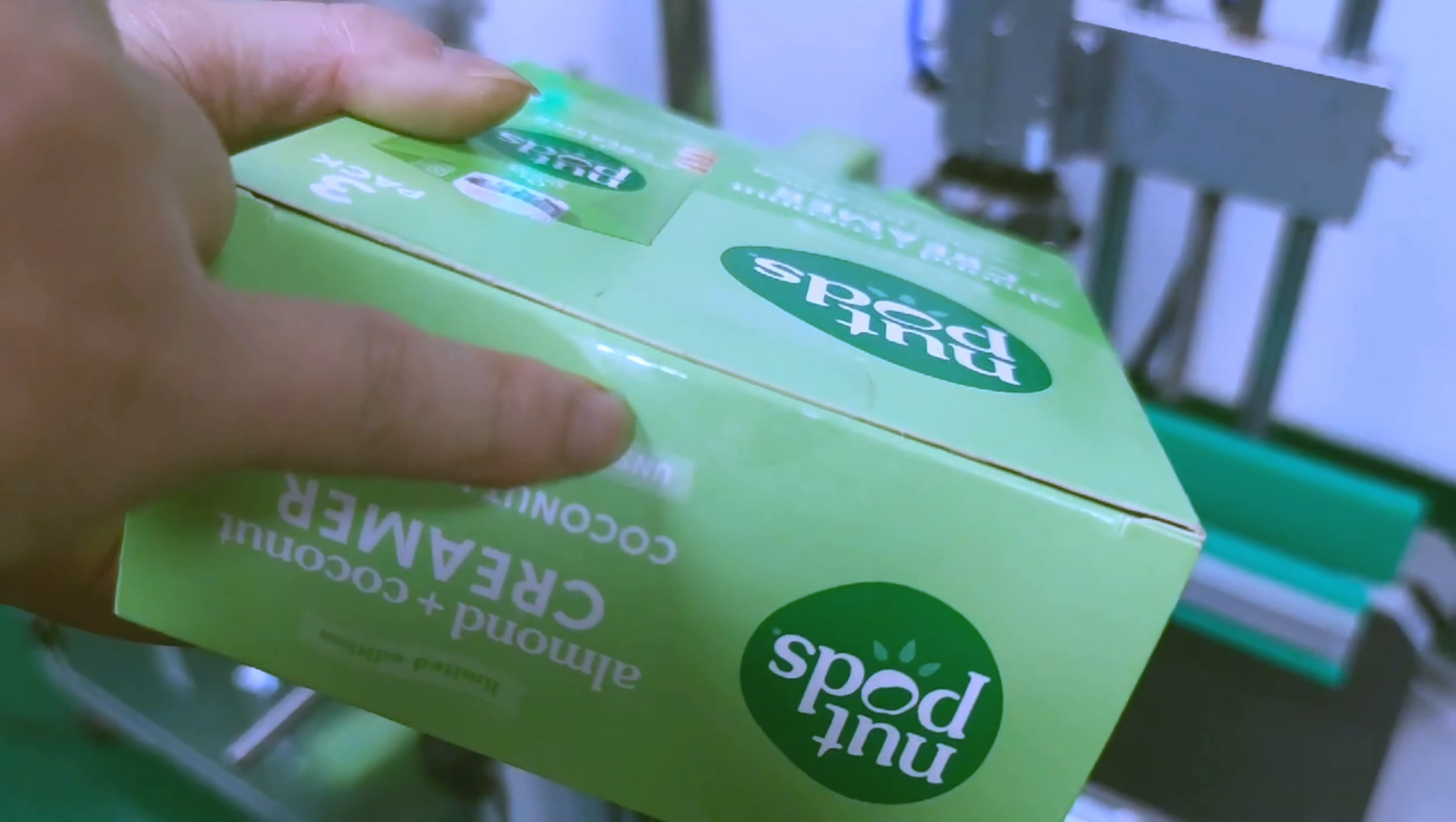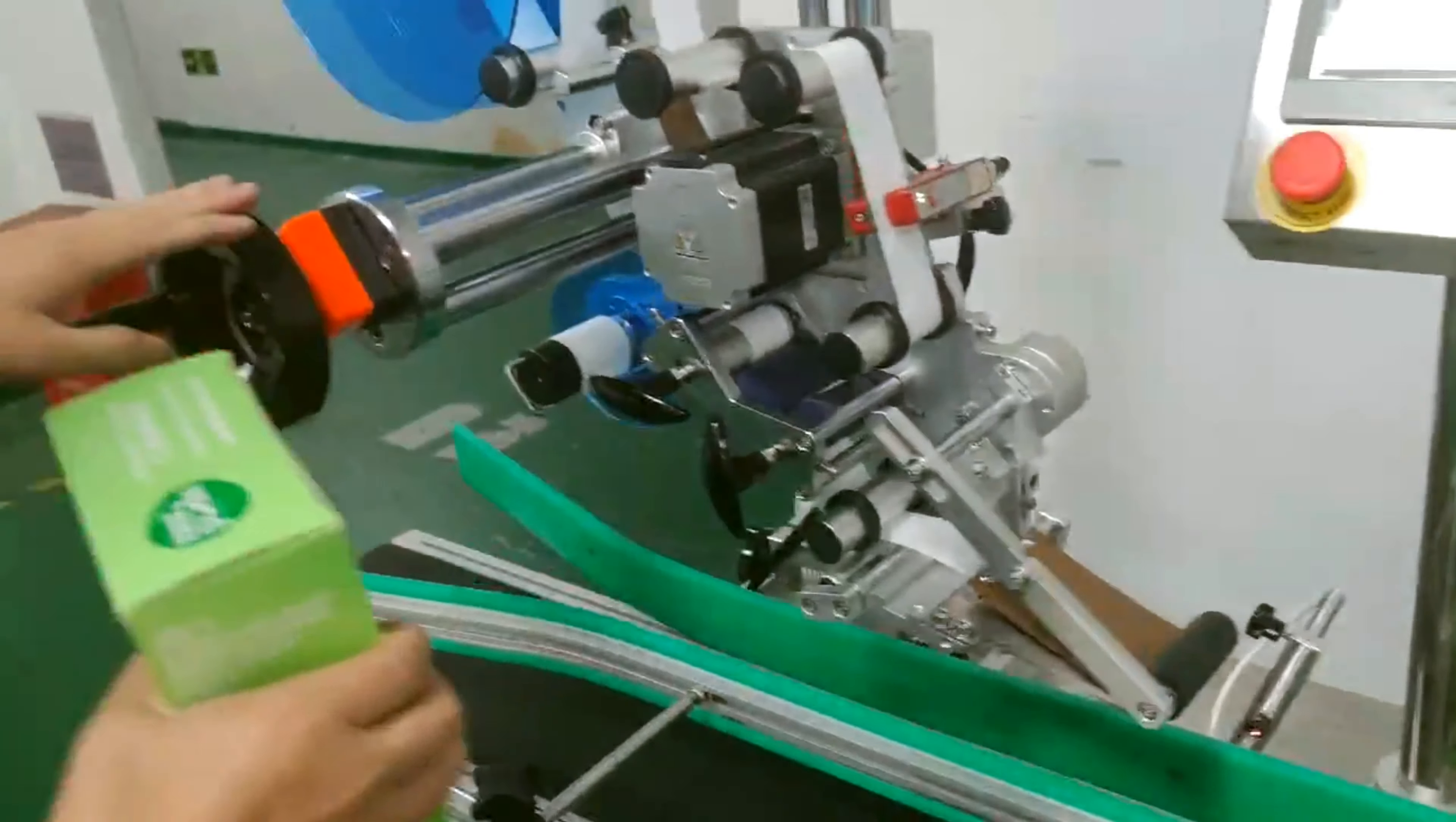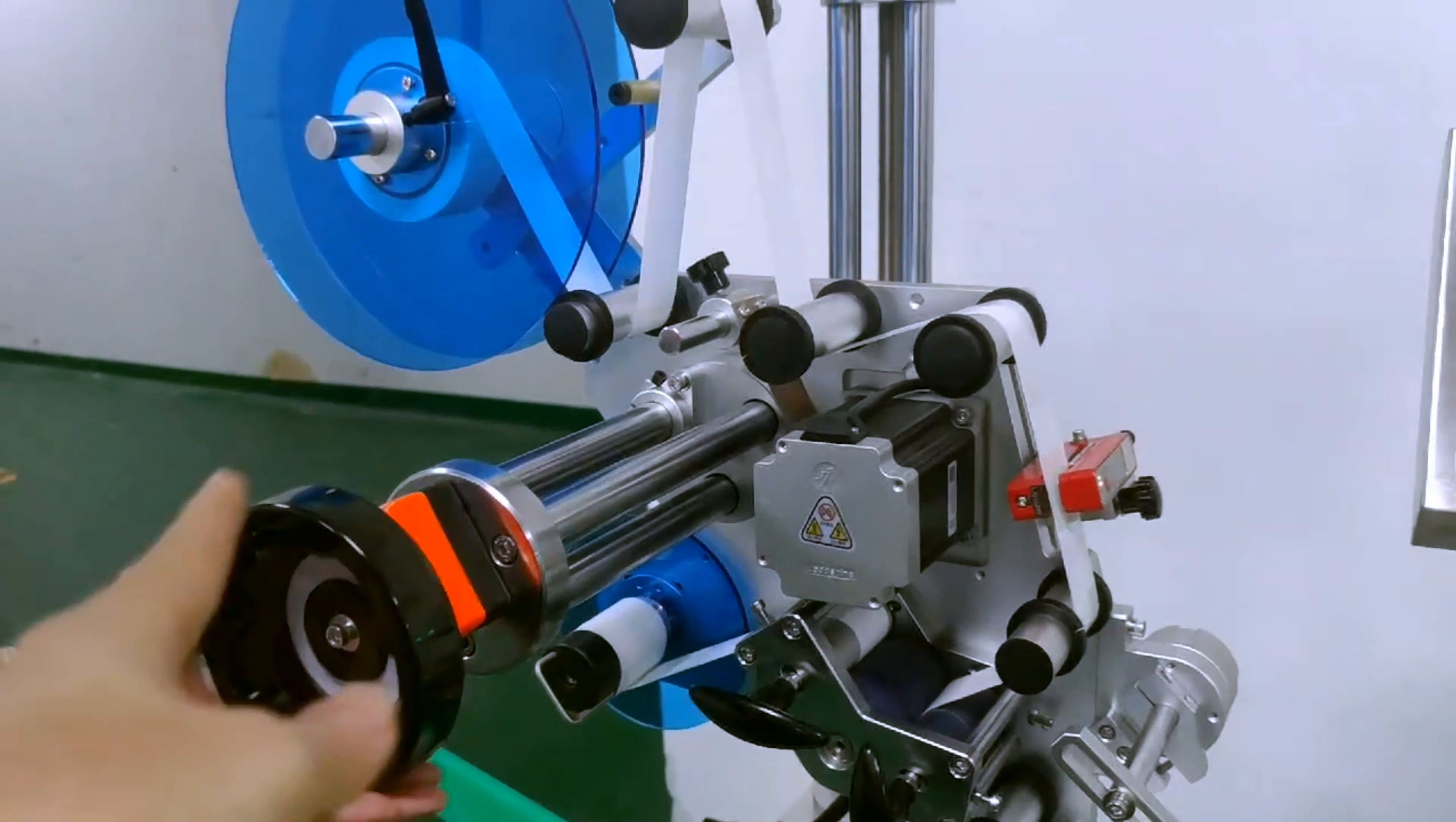When you find the label here is less and that side is longer, now we will show you how to adjust it. Just adjust the labeling head, like this direction.